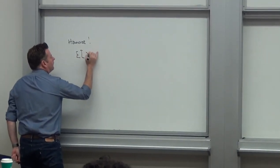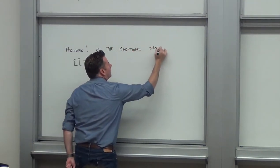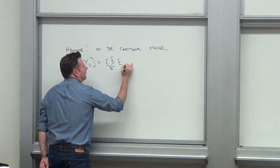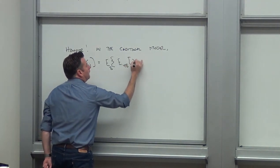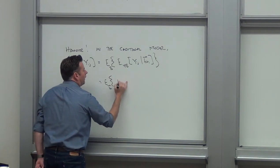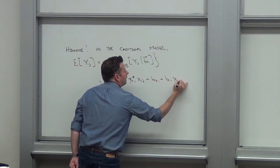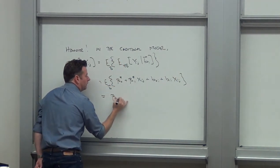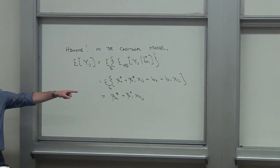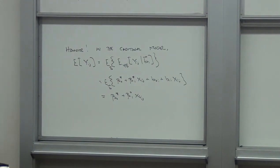However, the expectation of YI in the conditional model is the expectation of YI is equal to the expectation with respect to little b of the expectation with respect to Y given little b of YIJ given BI. Now, that's equal to the expectation with respect to YI, B0 star plus B1 star XIJ plus B0I plus B1I XIJ. And that thing is equal to, I haven't written down the full model over there, but what are we assuming about little b? Expectation 0. Expectation 0, variance covariance matrix D, normally distributed.